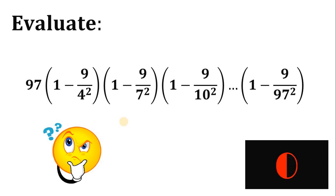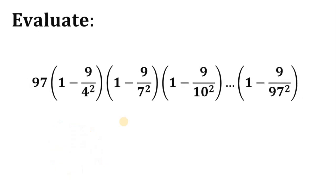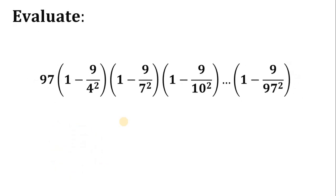Now let's answer this question together. Our goal is to evaluate this huge expression from 97 times 1 minus 9 over 4 squared, up to 1 minus 9 over 97, quantity squared. So how are we going to evaluate this one?